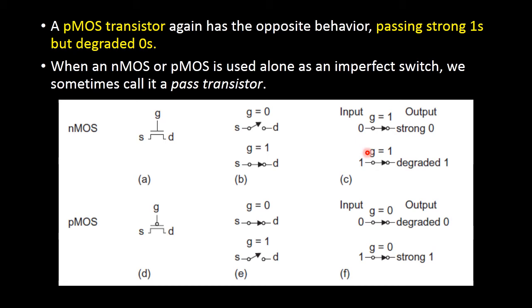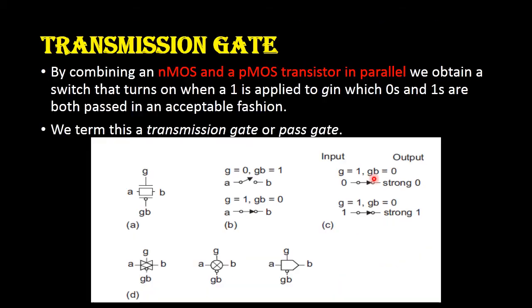These are the two important characteristics of PMOS and NMOS transistors. If we use PMOS transistor and NMOS transistor separately, we will not get strong 0 and strong 1 at the same time — so that is the problem. This problem can be overcome by the use of transmission gates.